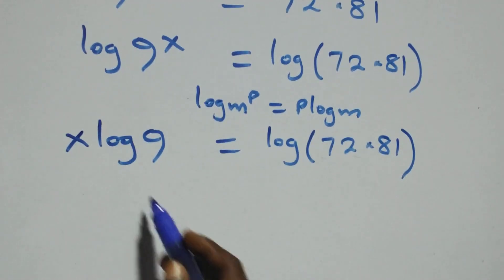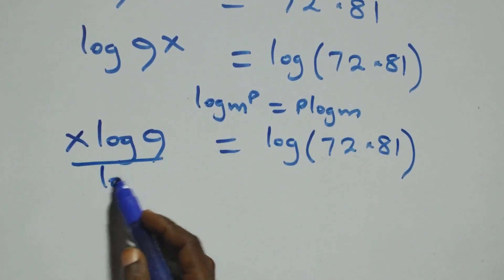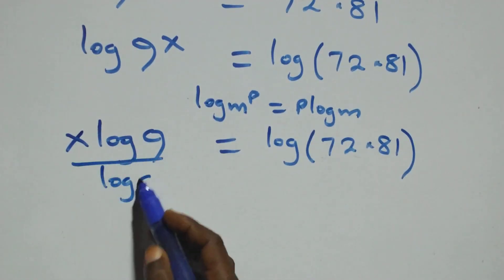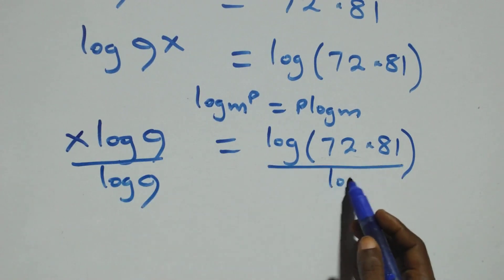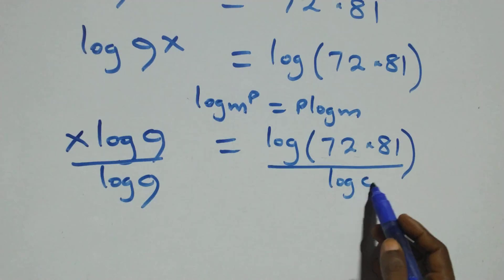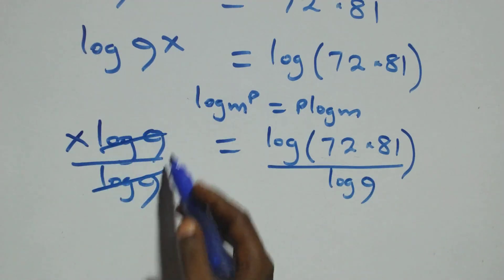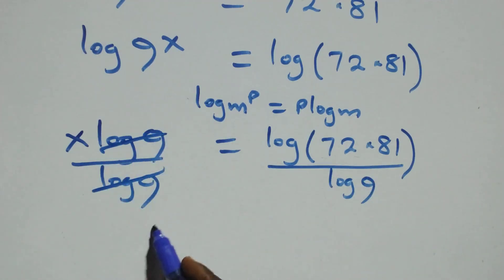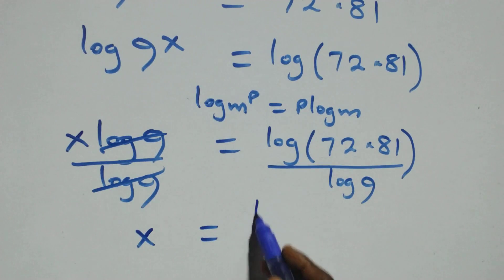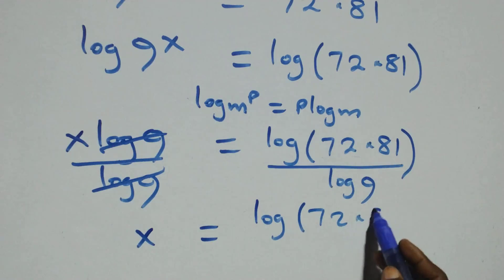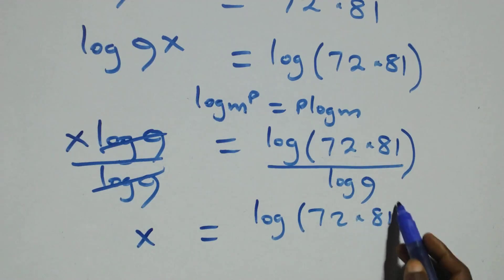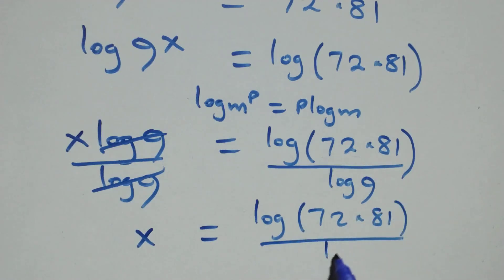We divide both sides by log 9. Log 9 cancels with each other, and x equals log(72 times 81) over log 9.